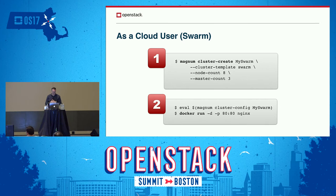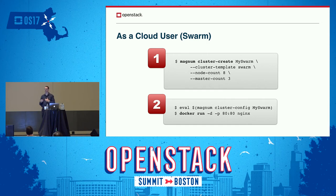Alternatively, the same experience applies if you were creating a Swarm cluster. You provide a name, indicate what template to use, and the size in terms of how many nodes and how many masters. The same cluster config command pulls in the TLS certificates necessary to interact with the cluster, and then you can use the native client directly against it — this is going to run a Docker container within the Swarm.